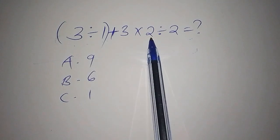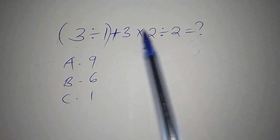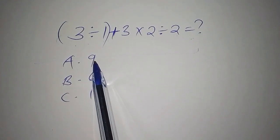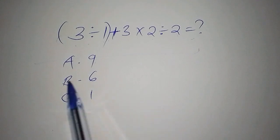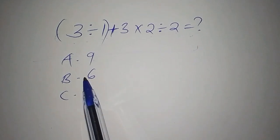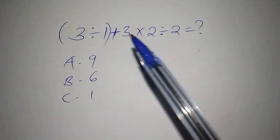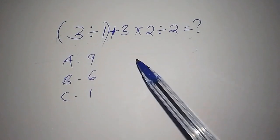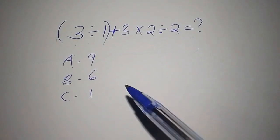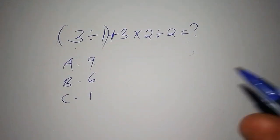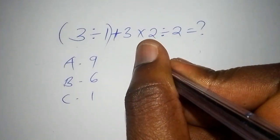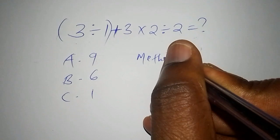Choice A: 9, choice B: 6, choice C: 1. There were two methods that were used - Method 1 and Method 2. With both of those methods, we shall see how different people arrived at the answer.